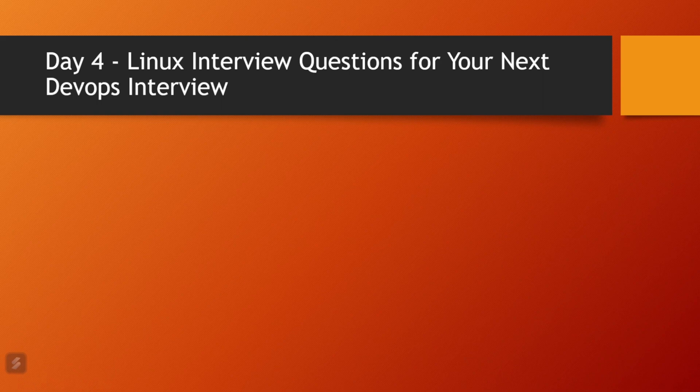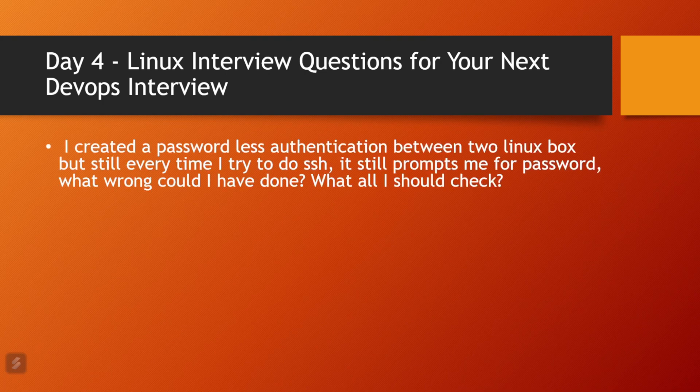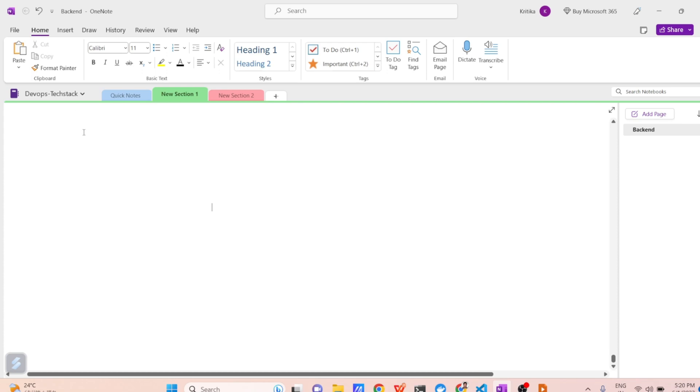Hello all, welcome to the channel DevOps Tech Stack. I hope you all are doing safe and sound. Today I am back with a Day 4 video on the interview series for DevOps. The very first question in my list is: let's say if you have set up passwordless authentication between two Linux boxes but you are still prompted for a password when attempting to do SSH. There are a few troubleshooting steps you can perform if the SSH connectivity is not working.